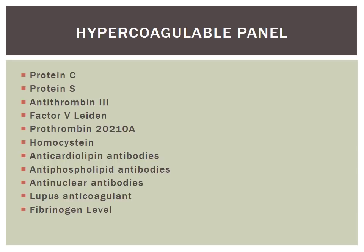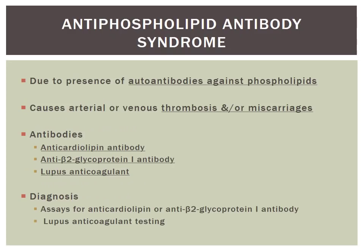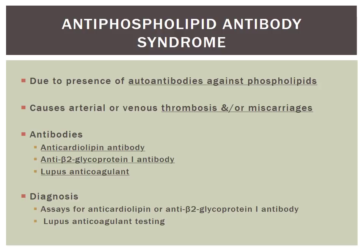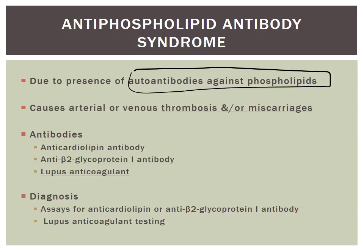Most systems have a hypercoagulable or thrombophilia panel available; familiarity with those tests is important. Antiphospholipid antibody syndrome is caused by an autoantibody against phospholipids, causing both arterial and venous thrombosis and can be a source of recurrent miscarriages. The antibodies involved include anti-cardiolipin antibody, anti-beta-2-glycoprotein 1 antibody, and lupus anticoagulant. These are diagnosed by assays for these antibodies or lupus anticoagulant testing.